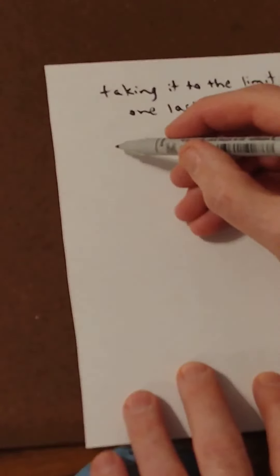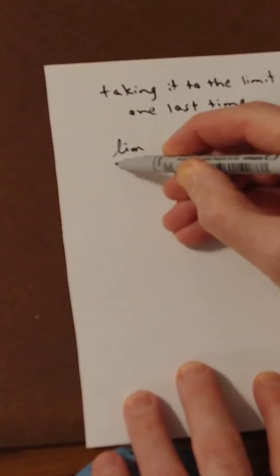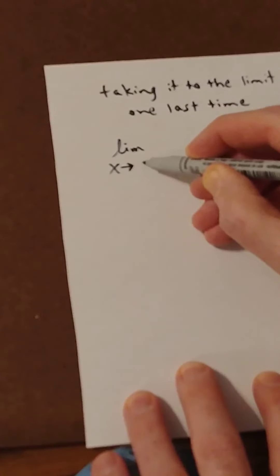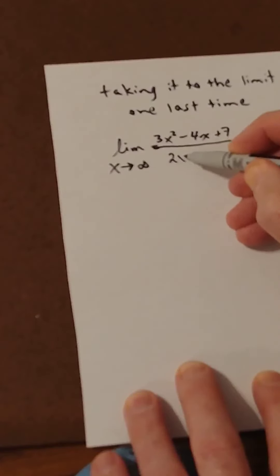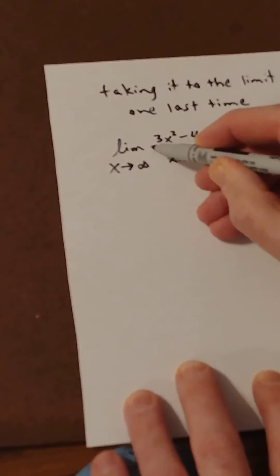And, finally, what's the limit? The limit, as x approaches infinity, strange things happen when you go to infinity, of, let's say, 3x squared minus 4x plus 7 over, I don't know, 2x squared plus 5x. You may know the answer, but let's calculate it.